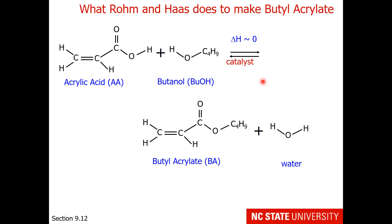The first thing to do is add a catalyst. That doesn't necessarily help with making more product, but it does save money because the reactor does not need to be heated as hot. Another thing to do is drive the reaction forward by adding additional reactant. Our ratio for acrylic acid and butanol is 1 to 1, according to the reaction stoichiometry.